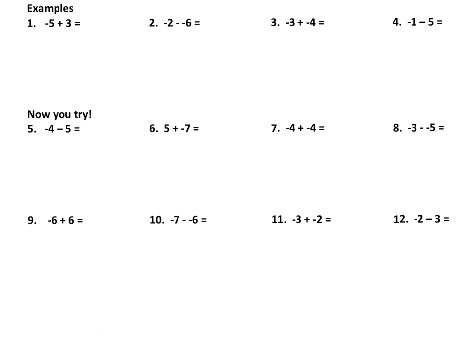As you can see in the first problem here, the problem is negative 5 plus 3. To illustrate this, since there are 5 negatives, I'm going to draw 5 negative signs. And since there are 3 positives, I'm going to line up 3 positives underneath. A positive and a negative cancel each other, so we have 3 that cancel each other, and we end up with an answer of negative 2.